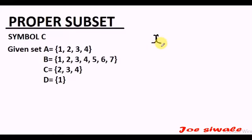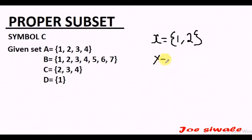If set X has two elements which is 1 and 2, and set Y has one element which is 1, I can say Y is a proper subset of X because 1 is contained in X, and set X has an extra element which is 2.